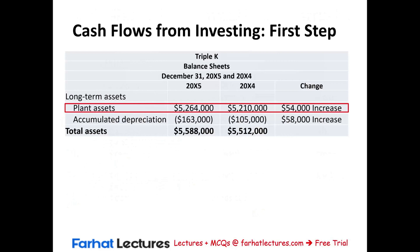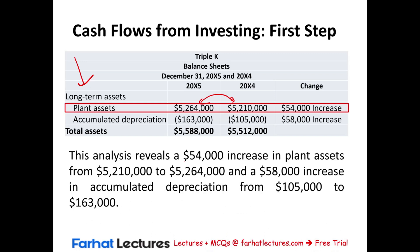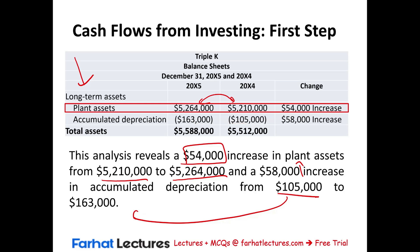Let's zoom in on the balance sheet, focusing on the long-term asset section. We see an increase of $54,000 in plant assets, from $5,210,000 to $5,264,000. Accumulated depreciation also increased by $58,000, from $105,000 to $163,000. Remember, accumulated depreciation is a contra asset, so it's a negative. If that's all we were given, plant assets increased by $54,000 — but that's not the full picture because we have additional information.